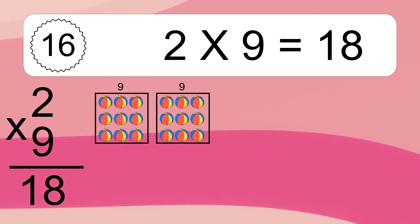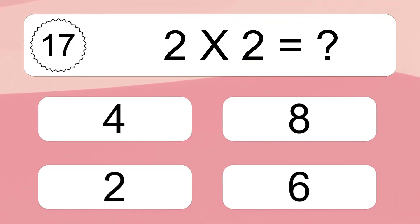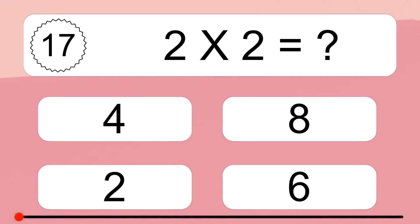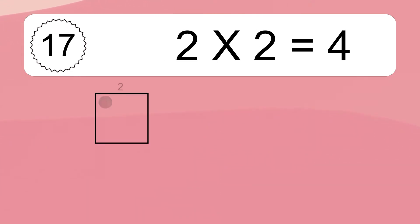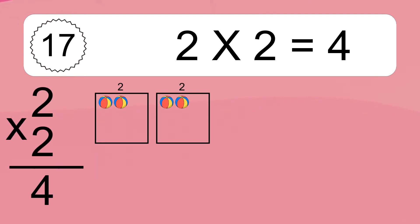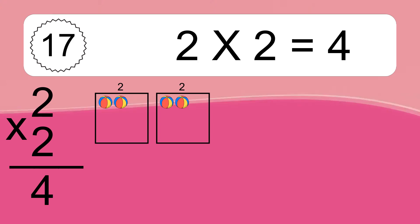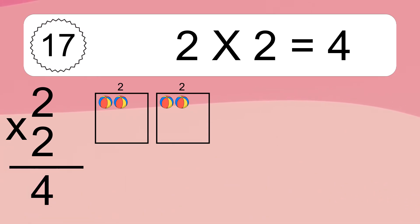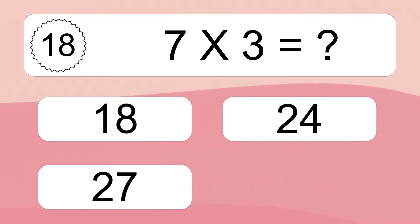Two times two equals what? Two times two equals four. We have two boxes, and each box has two colorful balls inside. If you count all the balls in all the boxes together, you will have two times two balls. This equals four balls.